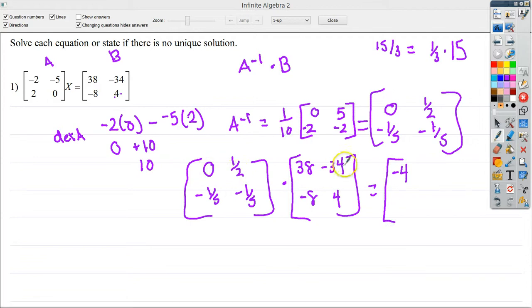For the next one, I would do 0 times negative 34, it's 0 again. Then I do one half times 4, so I get a 2. Then I'm going to do negative one fifth times 38, so I would get negative 38 over 5. Then I add negative one fifth times negative 8, which is 8 over 5, which brings this to negative 30 over 5, which is just negative 6.